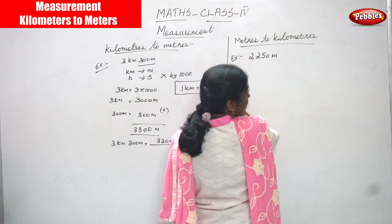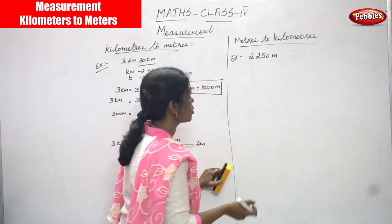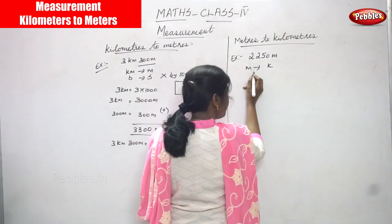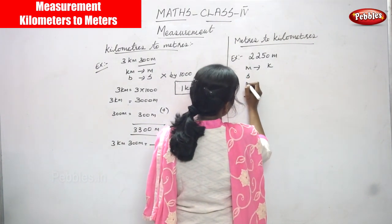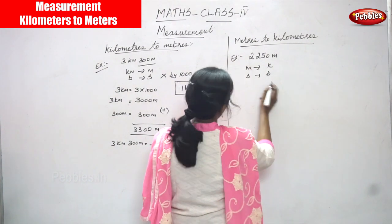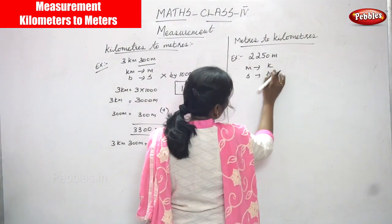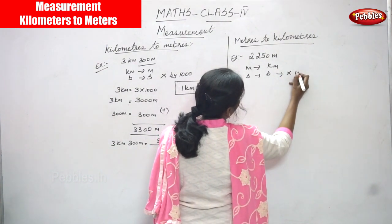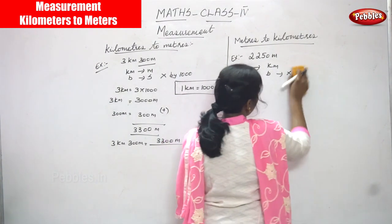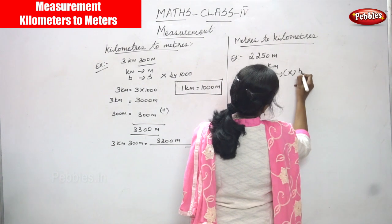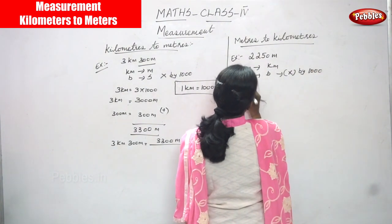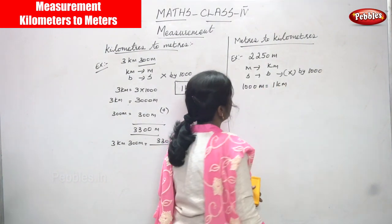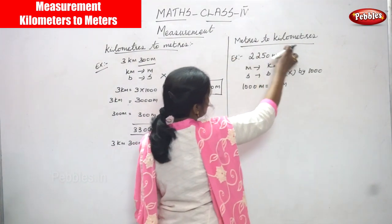Next: meters to kilometers. It is also converting meters to kilometers. Meter is a smaller unit and kilometer is a bigger unit. Smaller to bigger — so you divide by 1000. That means 1000 meters is equal to 1 kilometer. Now we are going to convert meters to kilometers.